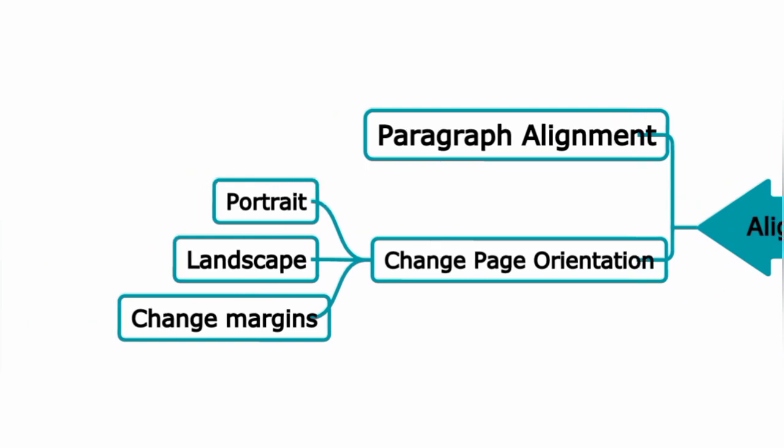Paragraph alignment — you can align text to the left side, center, or right end. A line of text can be placed on the left side or in the middle. You can change the alignment of a paragraph. This is the paragraph alignment option.